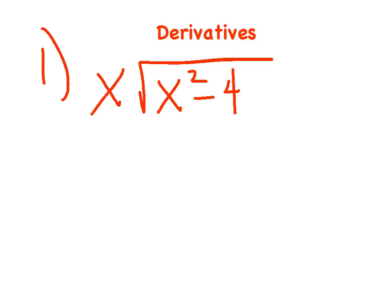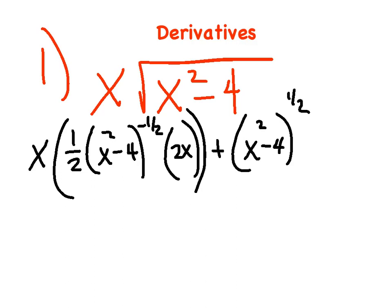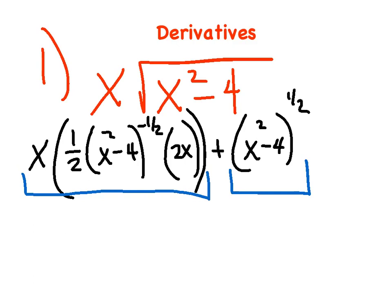So let's just compare derivatives. I've got: first times derivative of the second, which should be 1 half, the inside to the negative 1 half, times the derivative of the inside, plus — product rule — the second times the derivative of the first. I think everybody should be able to do that pretty easily. Now I want you to bracket the first quantity up to the plus sign, and bracket after the plus sign. There are two quantities here — all this is one term, and the other part is one term.